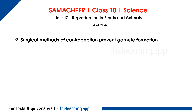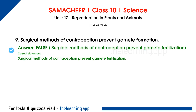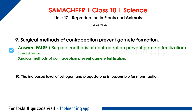Ninth question: surgical methods of contraception prevent gamete formation. This is false. The correct statement is: surgical methods of contraception prevent gamete fertilization.